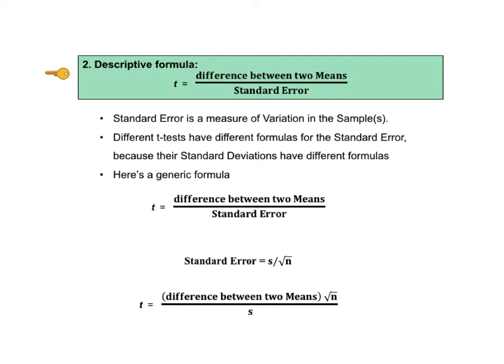Now different t-tests have different formulas for the standard error, but a generic formula for standard error can be stated as standard error equals s divided by the square root of n, where s is the standard deviation of the sample, and n is the sample size.